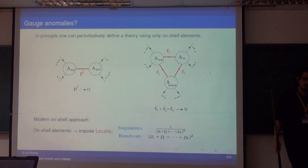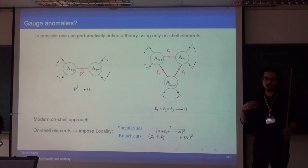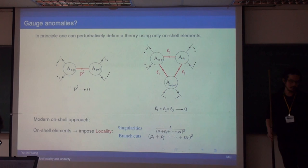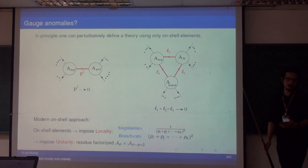An audience member asks: in standard field theory when we do loop calculations we know about wave-function normalization, mass normalization, etc. — how do we see those in this picture? The answer: once you have the tree, you construct your loop, and you see UV divergences that need to be considered as correcting your tree S-matrix elements — that's where normalization comes in. By unitarity, what we mean is that on branch cuts and singularities, the amplitude must factorize into known lower-point S-matrix elements or lower-point physical observables.